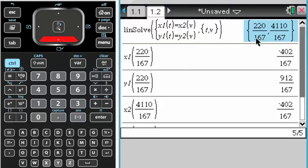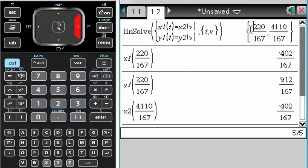So the first one goes through here, the second plane goes through here. Specifically, plane 1 goes through at 220 over 167 and plane 2 goes through at 4110 over 167.